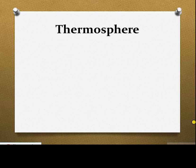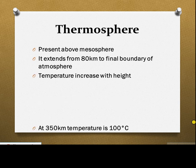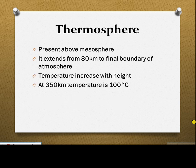The thermosphere is the uppermost and last layer of Earth's atmosphere. It extends from 80 kilometers to the final boundary of the atmosphere. Temperature increases with height in this layer, and at 350 kilometers, the temperature is 1000 degrees centigrade.